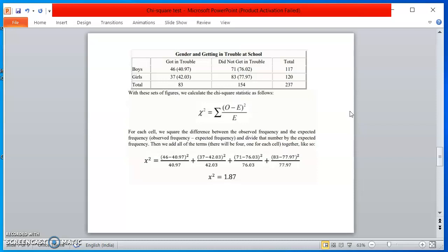Now, the formula is chi-square or x-square equal to summation of (O minus E)², O means observed minus expected, squared, divided by expected.